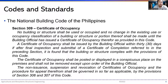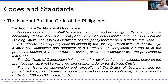The certificate of occupancy shall be posted or displayed in a conspicuous place on the premises and shall not be removed except upon order of the building official. The non-issuance, suspension, and revocation of certificates of occupancy and the procedure for appeal shall be governed by the provisions of Sections 306 and 307 of this code.